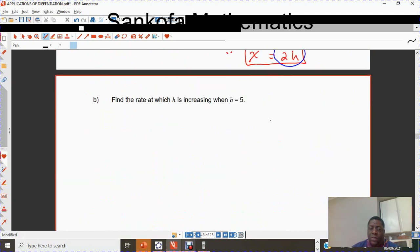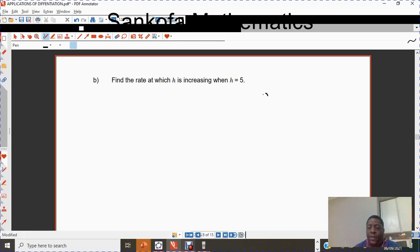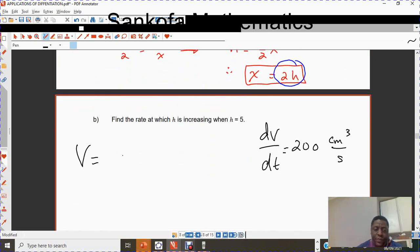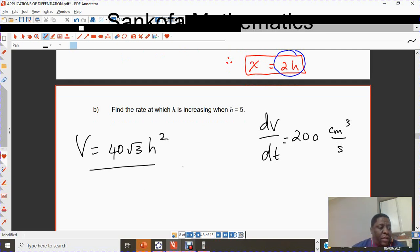Also, I know dV/dt is equal to 200. So let us just bring in what we know. We know that dV/dt was 200 cubic centimeters per second. We also know that the volume is given by 40√3h². We have got a few things that we need to do. The question says find the rate at which h is increasing when h equals 5. So we are looking for the height may vary with respect to time. What we are actually looking for is dh/dt when h equals 5.